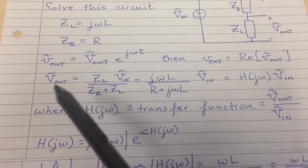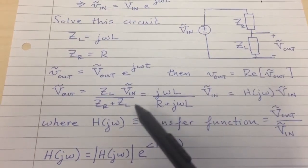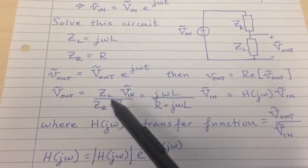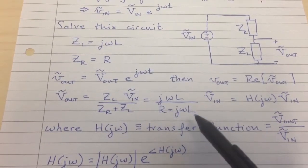Now, the circuit is just a voltage divider. So we just use the usual voltage divider relation, Z_L over Z_R plus Z_L. Substituting for the impedances, we get this.